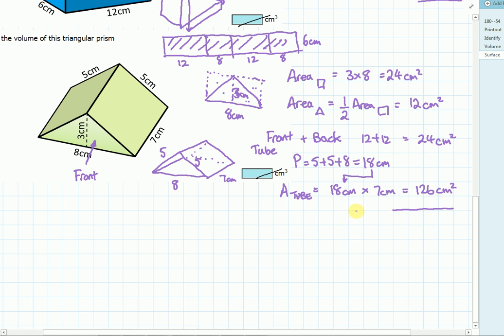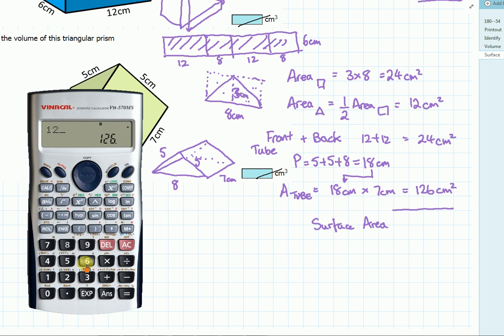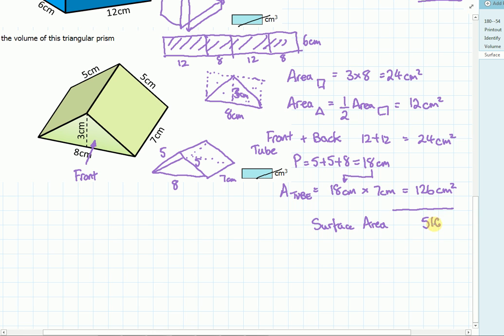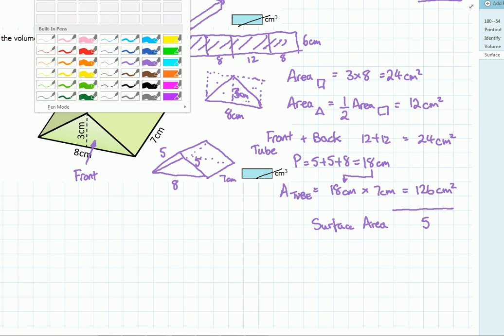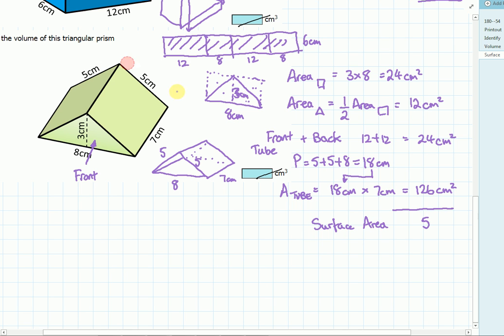So the total surface area is the sum of those two, which is a hundred and fifty. A hundred and twenty-six plus twenty-four. And that's a hundred and fifty centimeters squared. So this is an alternate method. When you're not using cuboids, you should be able to do some of the level three questions now.